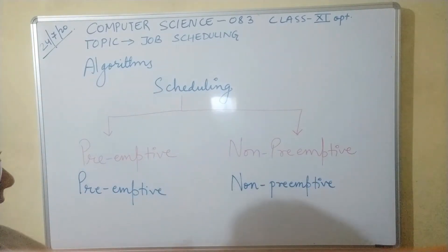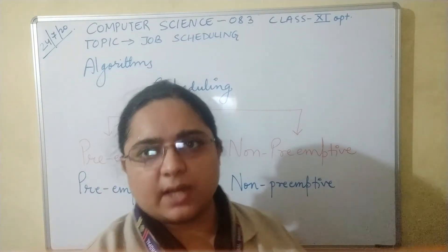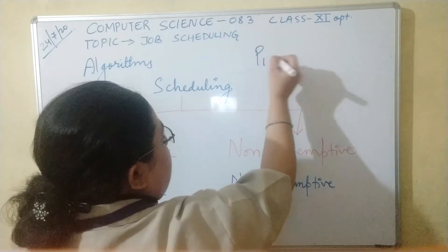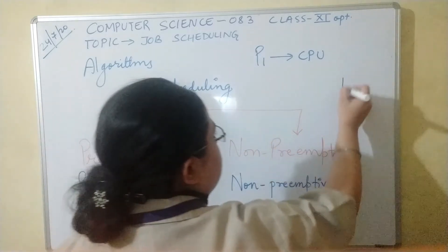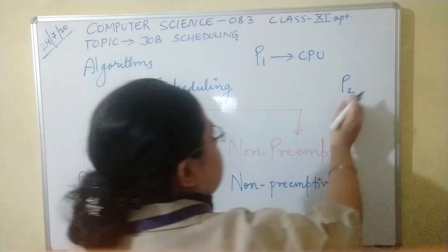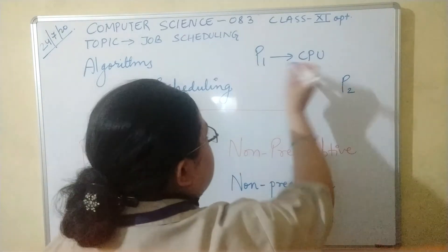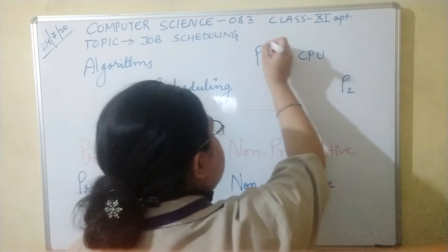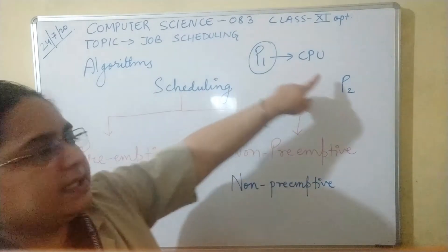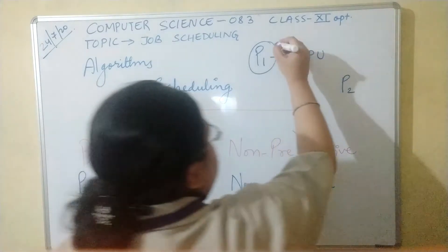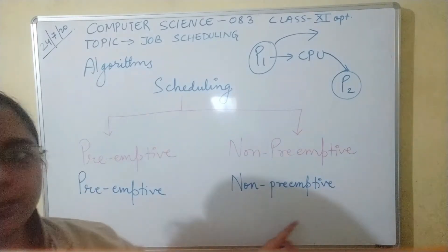In non-preemptive scheduling, while process P1 is already in execution and running on the CPU, if another process P2 comes into the ready queue with higher priority, the CPU will continue the execution of P1 — P1 will not leave the CPU until it completes its execution. Once P1 completes its execution and leaves the system, then only will the CPU move on to P2. That is non-preemptive scheduling.